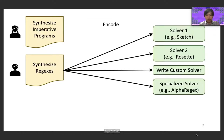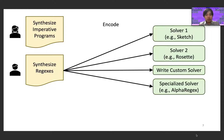In a similar scenario, let's assume that Bob comes along and wants to synthesize regular expressions. Bob has a similar set of choices to Alice—he could try a general program synthesizer, write his own synthesizer, or try a specialized solver for regular expressions. The same problem holds: Bob is going to have to re-encode his problem every time in a different syntactic format when he wants to try a new solver, although semantically he's just trying to synthesize the same regular expression problem.